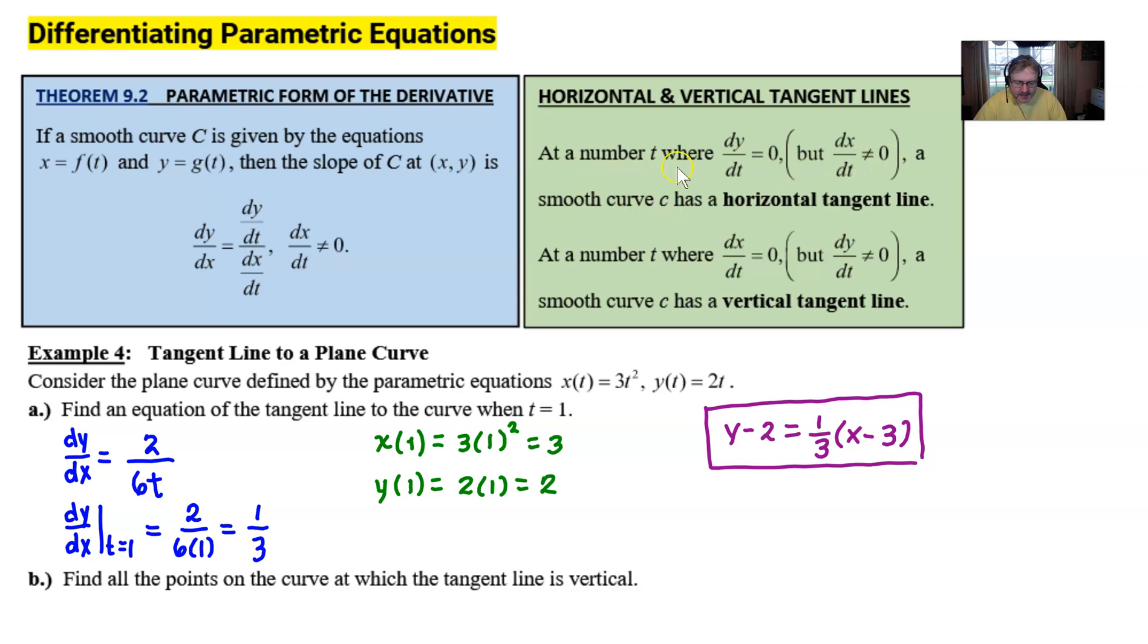It says at a number t, if dy/dt is equal to 0, so we're talking about the numerator equaling 0, but at the same time the denominator doesn't equal 0, a smooth curve would have a horizontal tangent line. Makes sense. Set the top equal to 0, horizontal tangent line. At time t, where dx/dt, so now that is the bottom, if the bottom is equal to 0, but not the top at the same time, then we have a vertical tangent line. It really is as simple as that. The key is you've got to check both.